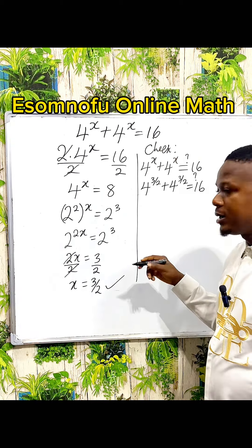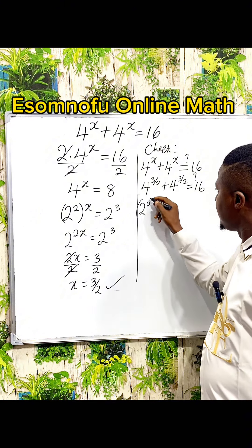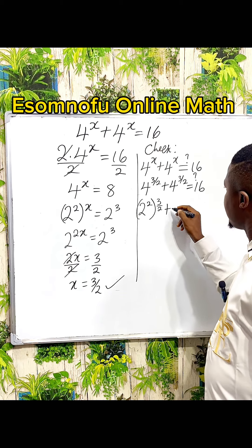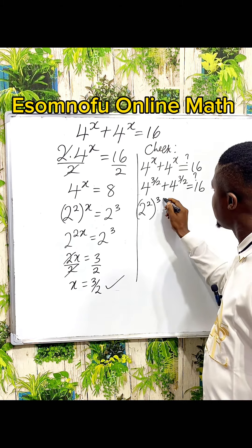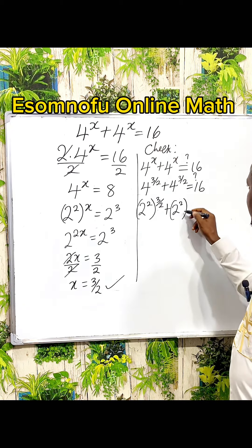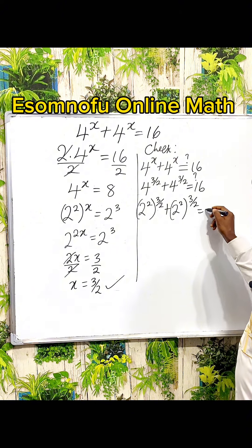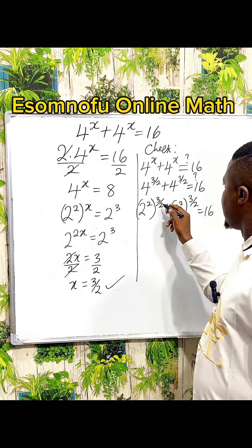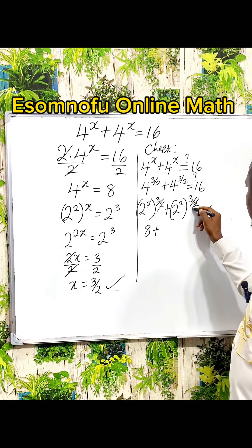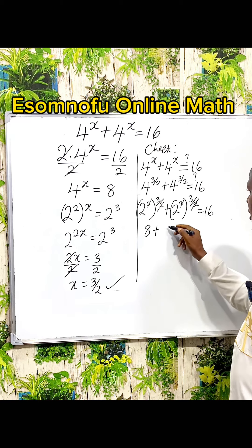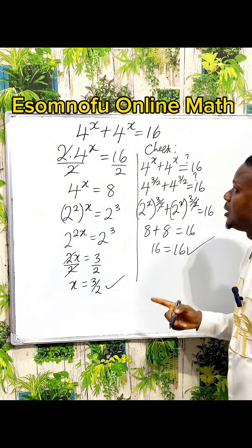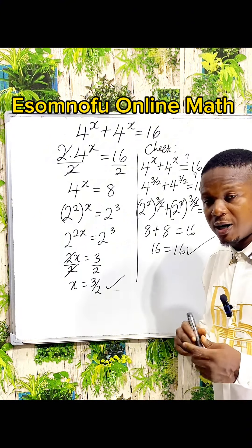Remember that 4 can be written as 2 to the power of 2, then you have your power of 3 over 2. Plus the same thing here — 4 can be seen as 2 power 2, you still have your 3 over 2 outside, equal to 16. Now this we cancel out — we have 2 power 3, which is 8. Plus this we cancel out — we have 2 power 3, which is also 8. You can see that both sides give us 16, so our solution is correct.